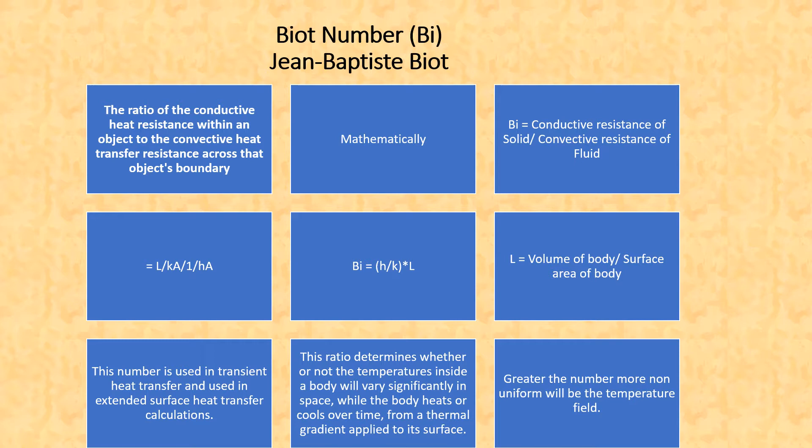Another definition of Biot number is conductive resistance of solid divided by convective resistance of the fluid. Mathematically, Biot number is equal to h upon k times L, or the ratio of h upon A multiplied by L, where L is the characteristic length whose formula is volume of body divided by surface area of that body.